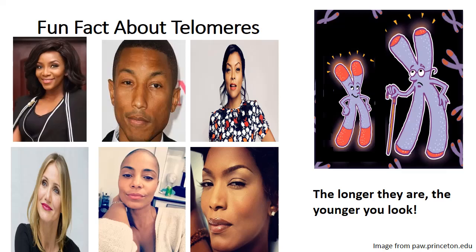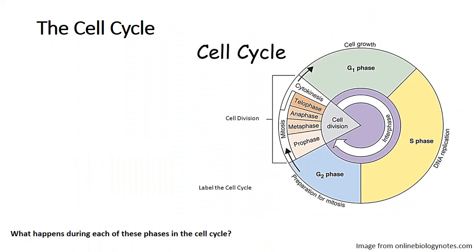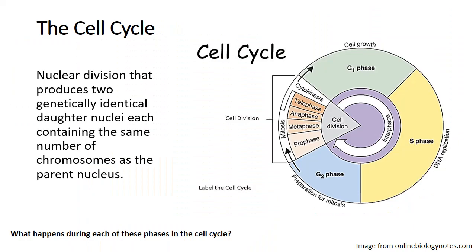Now let's get to the cell cycle. The cell cycle is simply the cycle that cells go through in order to divide. Looking at the image, the cell cycle is made up of a G1 phase, an S phase, a G2 phase, and then the cell division phase. The G1 phase represents cell growth; the S phase is where DNA replication occurs; the G2 phase is where the cell prepares for mitosis; and then we have mitotic cell division, also called nuclear division.